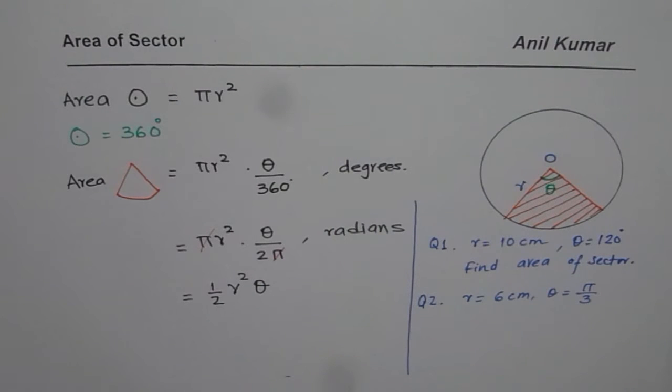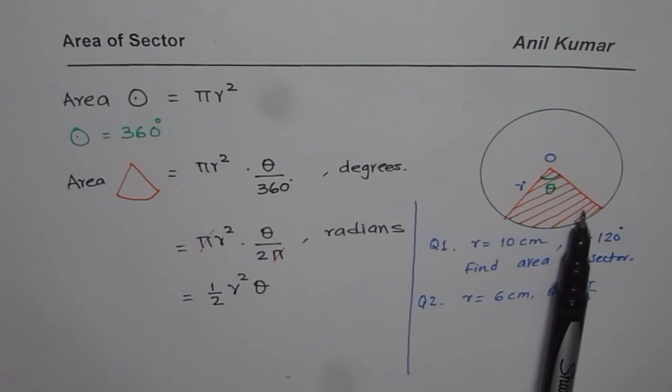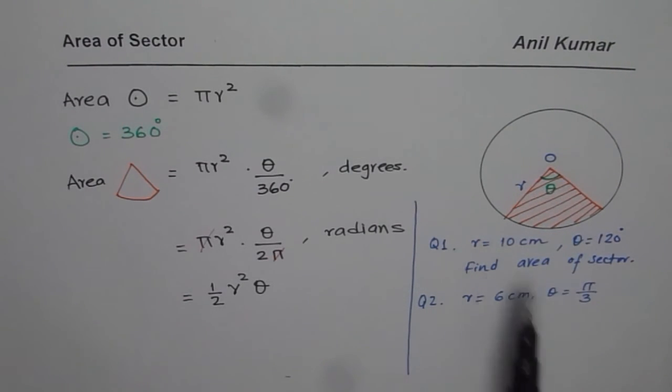I hope you understand how we derive the formula. The formula basically is the ratio of the area covered from the whole. That gives you the area of the sector. Thank you and all the best.